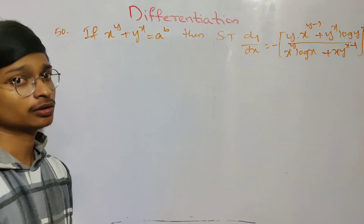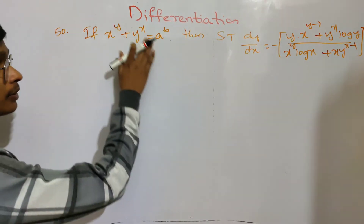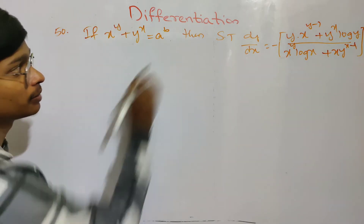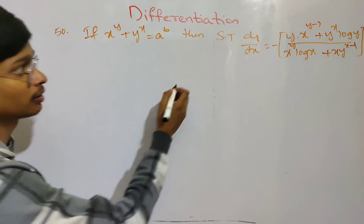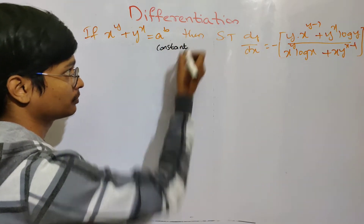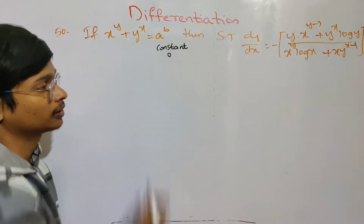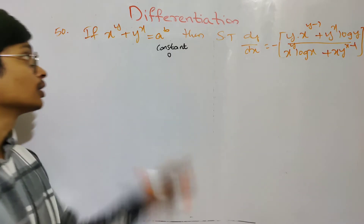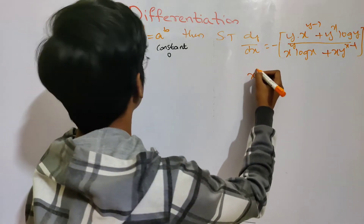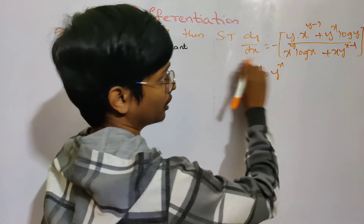This is the fifth question. We have x power y plus y power x equals to a power b. We have x and y as variables, and a power b is constant. We have to solve this question: given x power y equals to y power x, show the derivative.